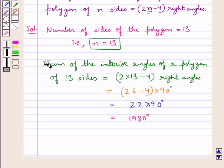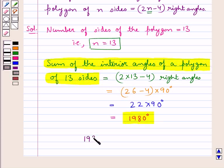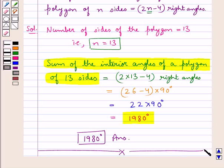Thus, sum of the interior angles of a polygon of 13 sides is 1980 degrees. So 1980 degrees is our final answer. This completes the session. Hope you have understood the solution of this question.